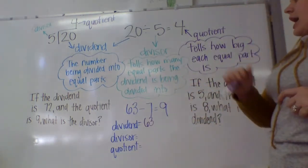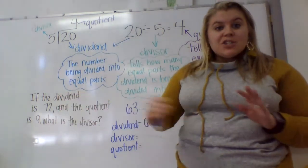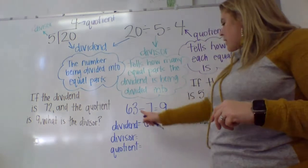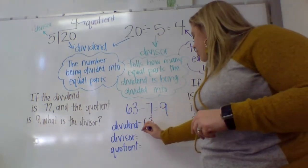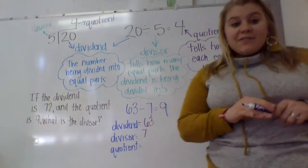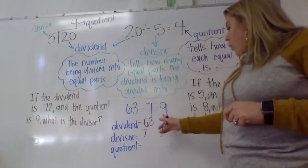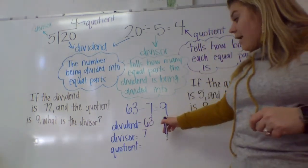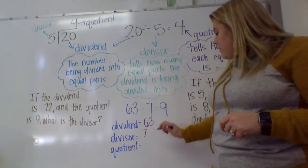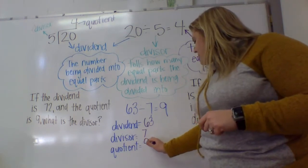My divisor, how many equal parts am I dividing it into? How many groups are there? I'm dividing it into 7 groups. So 7 is my divisor. My quotient is how many are in each group. There are 9 in each group. So that's the quotient.